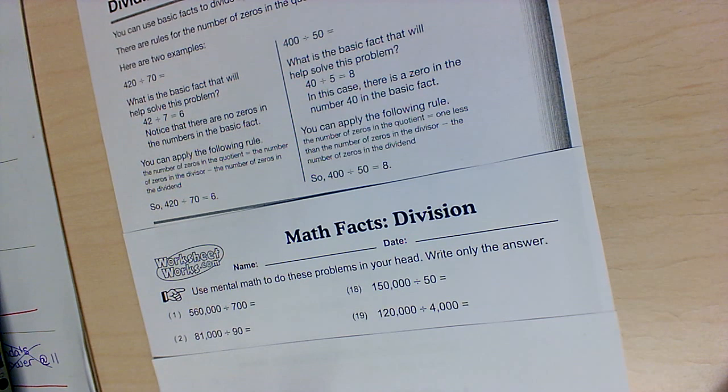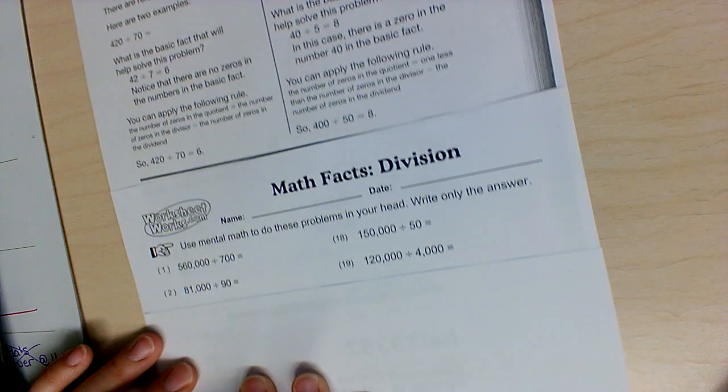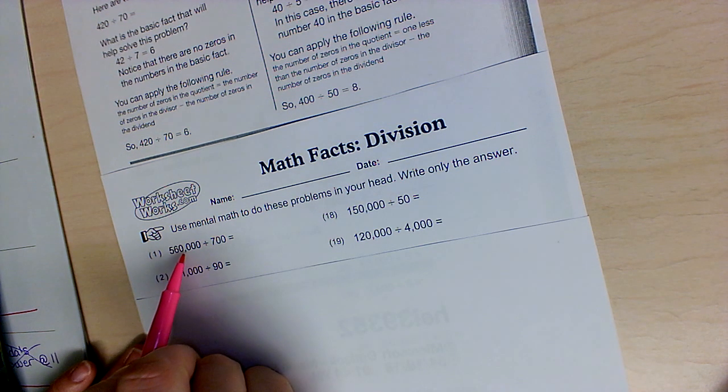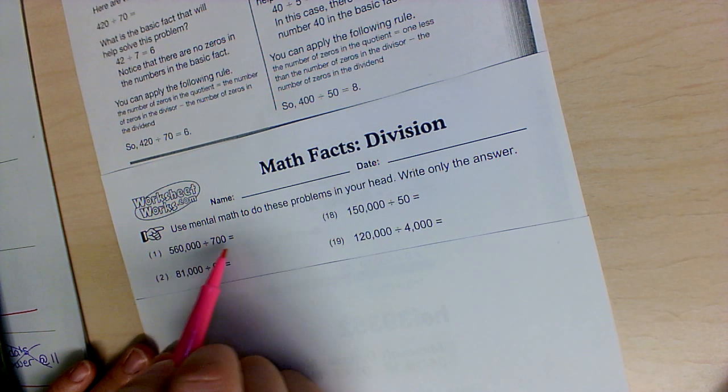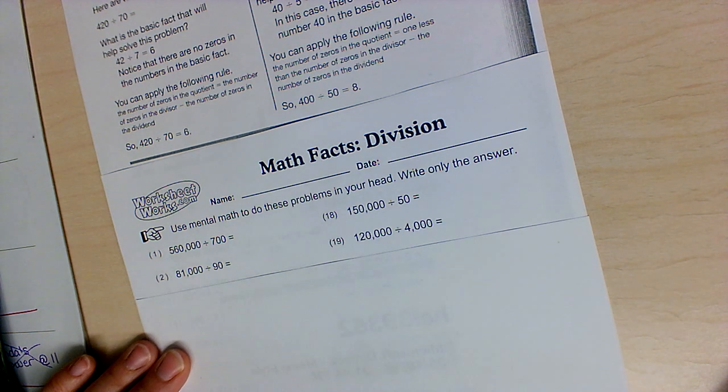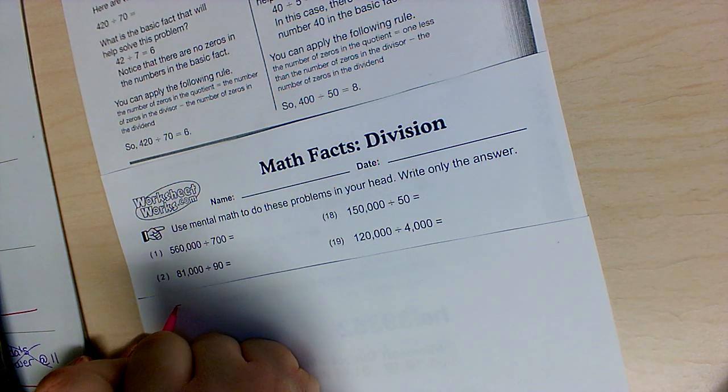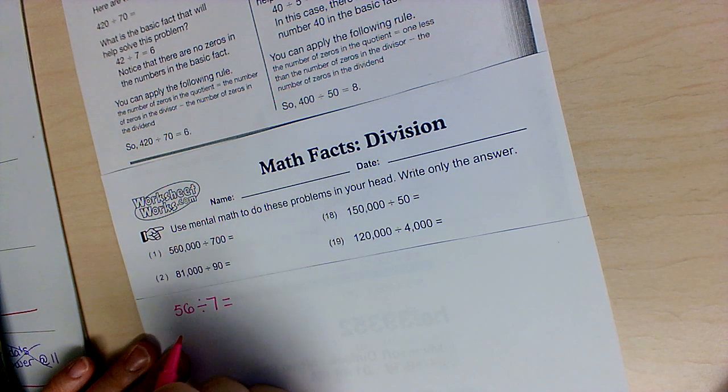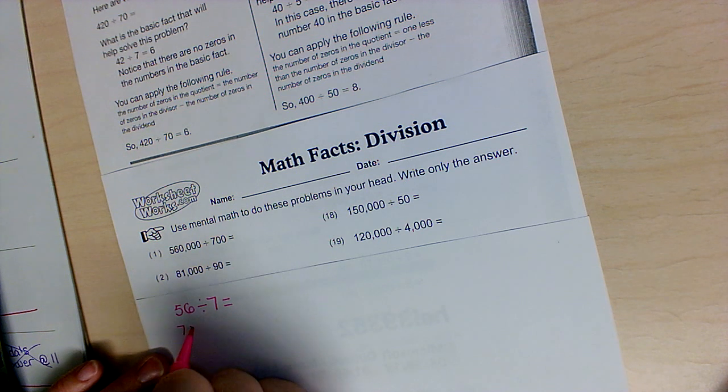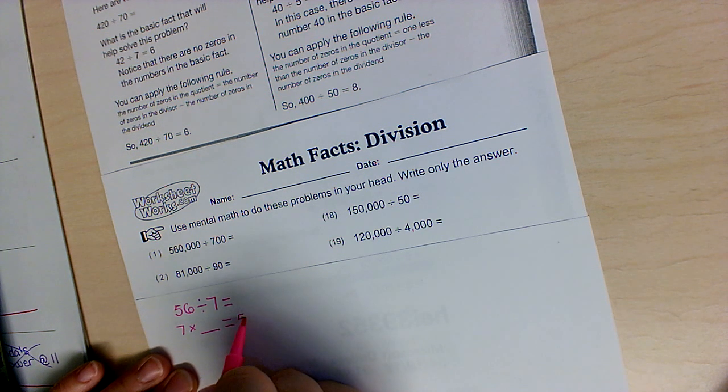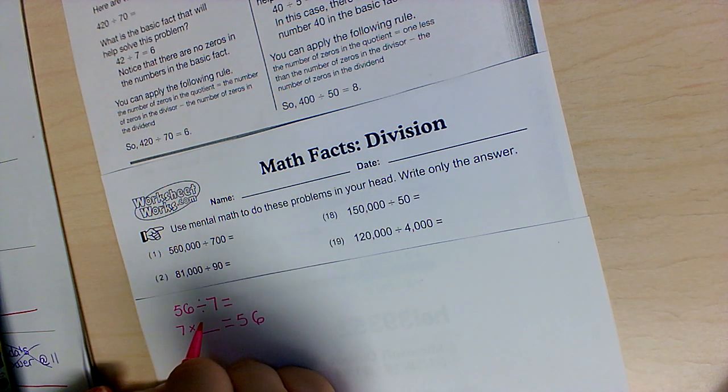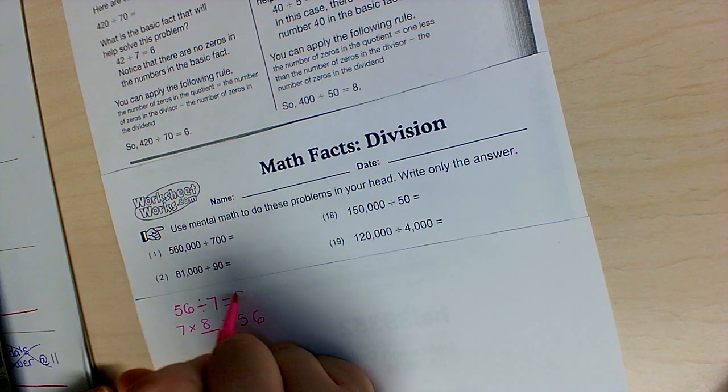Let's do a couple together. So 560,000 divided by 700. What we're really figuring out is 56 divided by 7, or if it's easier for you to think, 7 times what equals 56? I know 7 times 8 equals 56.